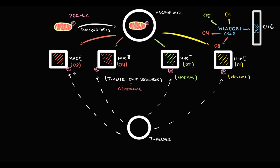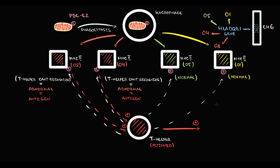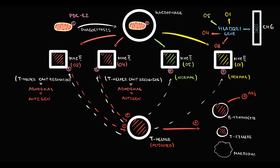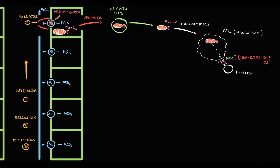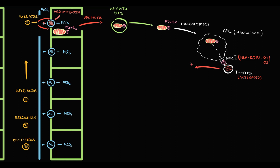Similarly, some people have the HLA-DQB1 08 allele — this MHC2 receptor also does not know how to present pyruvate dehydrogenase complex to T-helpers, so when T-helpers scan pyruvate dehydrogenase complex they cannot recognize it and consider it an antigen. In response to any antigen, T-helpers immediately become activated and subsequently induce activation of B-lymphocytes, which begin to produce antibodies. They also activate T-killers and macrophages, altogether causing massive inflammation in individuals with HLA-DQB1 04 and 08 alleles.